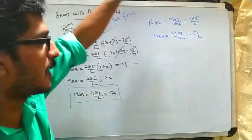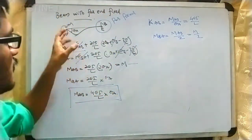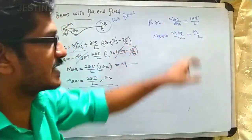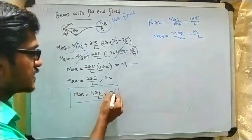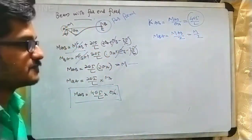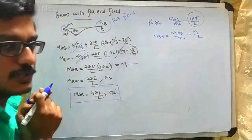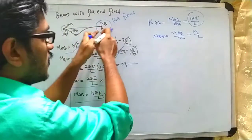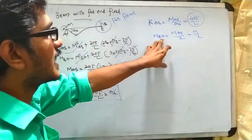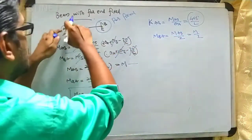Applying the stiffness definition — applied moment M_AB at joint A divided by unit rotation θ_a — θ_a cancels and the stiffness K_AB = 4EI/L. There is also a carry-over relationship: when a moment M is applied at joint A and the far end B is fixed, the moment developed at joint B is M/2.